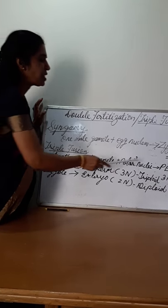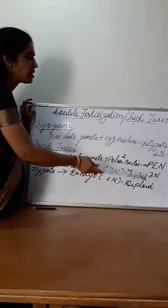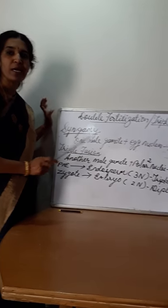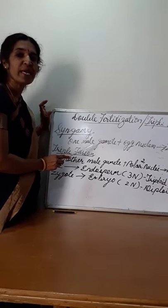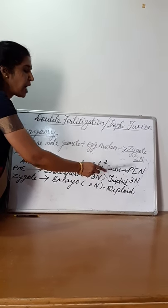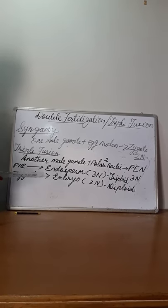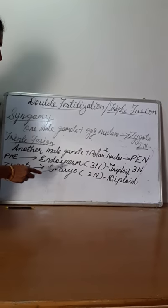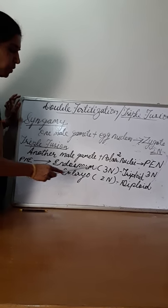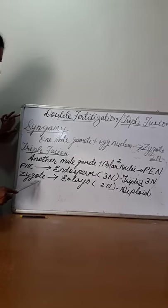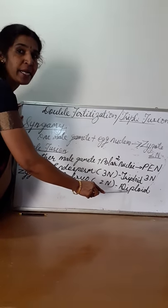These questions — what is the ploidy of the zygote? What is the ploidy of the endosperm? What is the ploidy of the nucleus? — are frequently asked in CBSE board exams, so you should be familiar with them. The zygote is diploid (2N), the endosperm is triploid (3N). Male gamete or pollen grain is haploid (N). The primary endosperm nucleus, after fertilization, will form endosperm — triploid in nature. After fertilization, the zygote will develop into the embryo, which is diploid in nature.